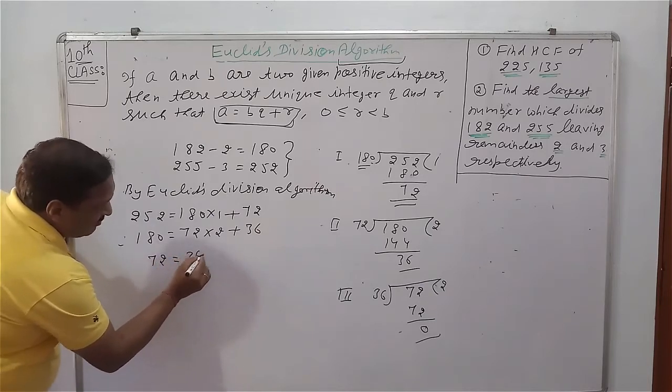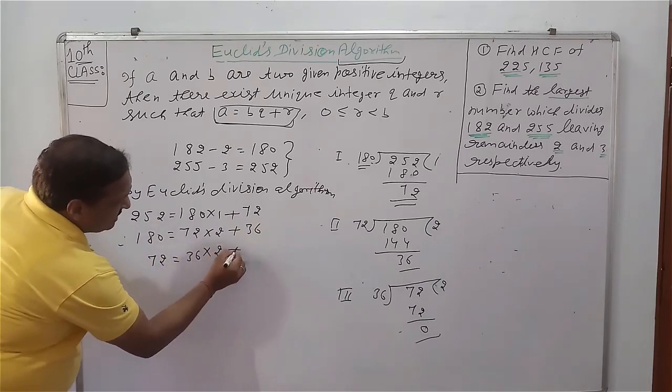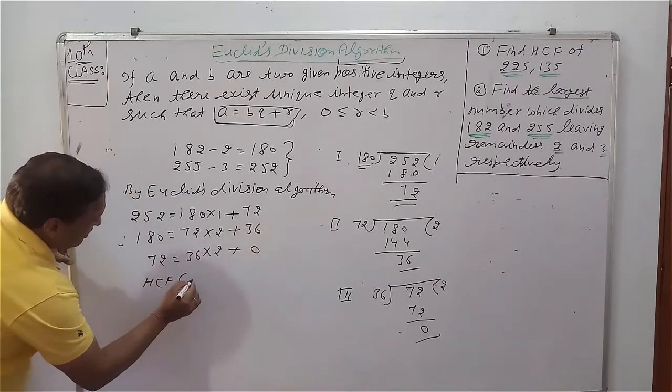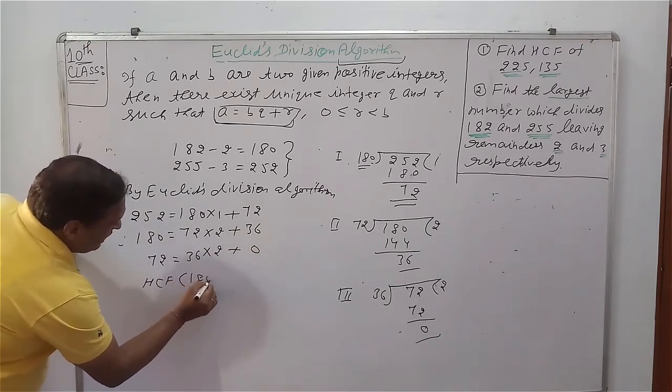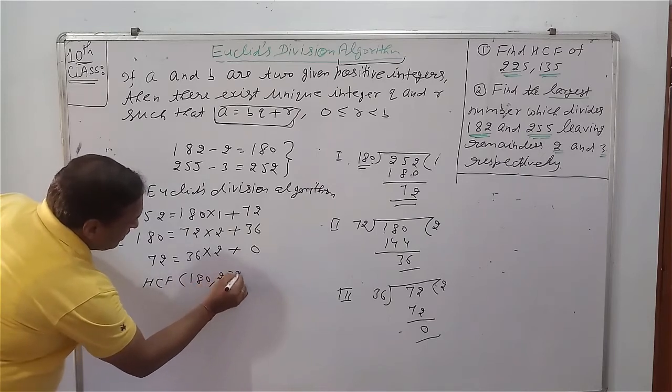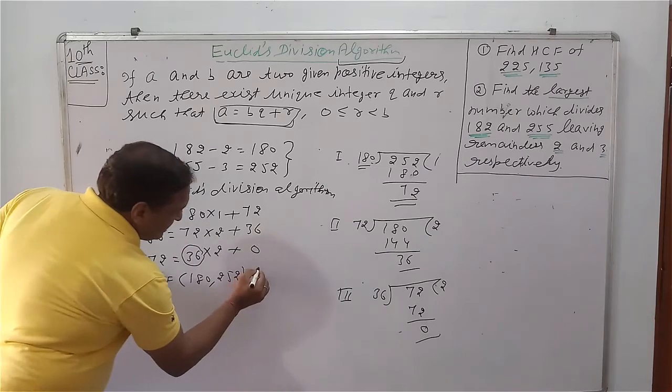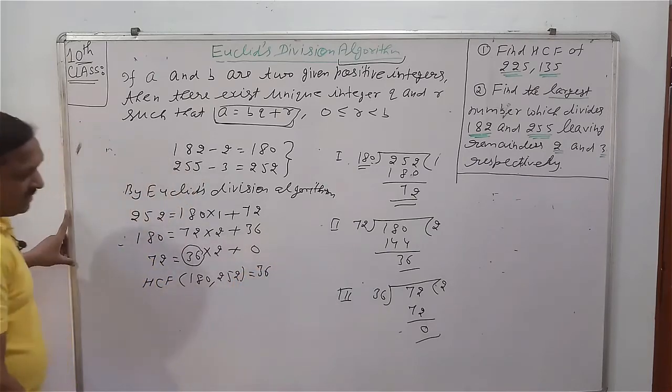And in the last step, 72 equals 36 multiply 2 plus 0. So HCF of 180 and 252 is the last divisor, that is 36. This 36 is the highest common divisor.